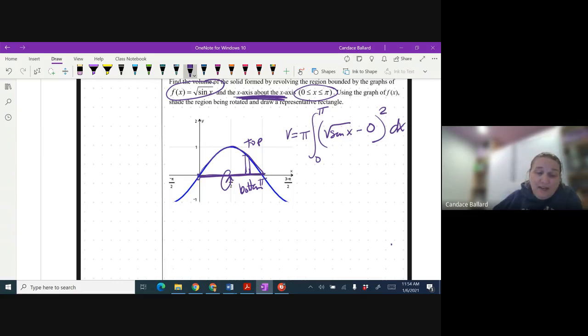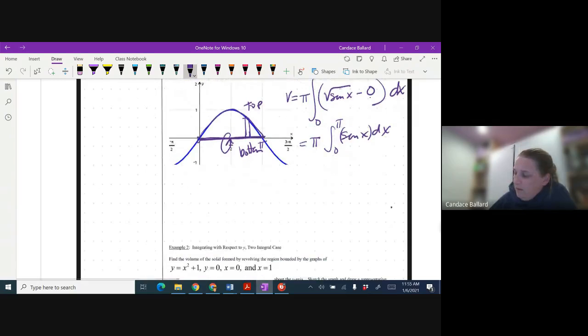I'm going to simplify that a little bit before I try to integrate it. Cause I am going to do the integration by hand this time. So pie, I don't really need the zero. And then when I square the square root that should disappear. So I've got zero to pie of sine of x dx.